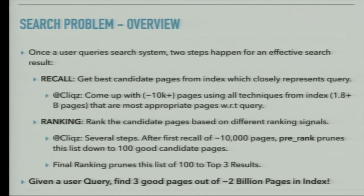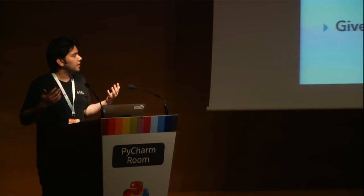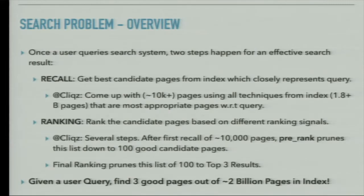The search problem can be seen as a two-step process: recall and ranking. Given an index of billions of pages, you try to get the best candidate set — say the 10,000 URLs that best fit the query. Then comes the ranking problem: given those 10,000 pages, give me the top 10, 100, or three results. As you may know, the second page of a search result is a dead page — everyone cares about the first page. At Clix, we focus on getting the three best results from our two billion pages in the index.